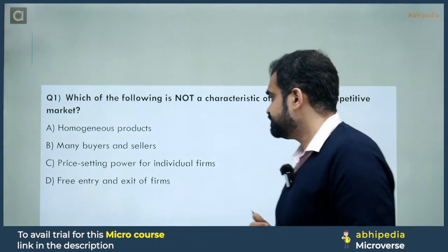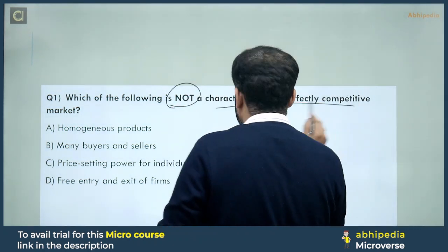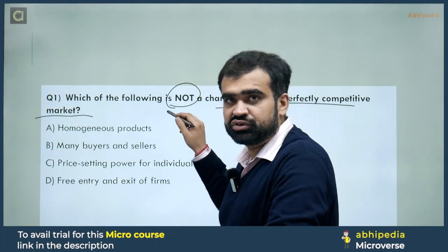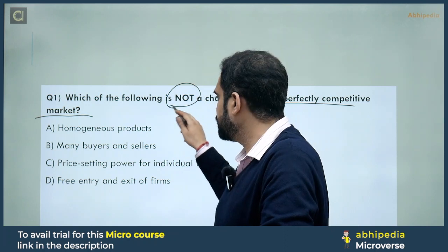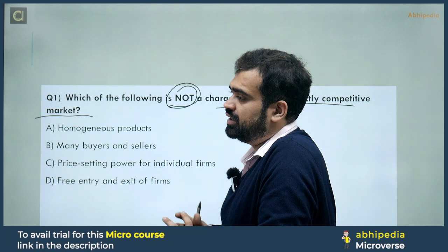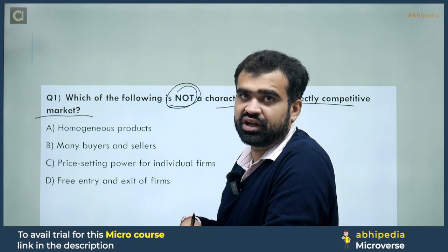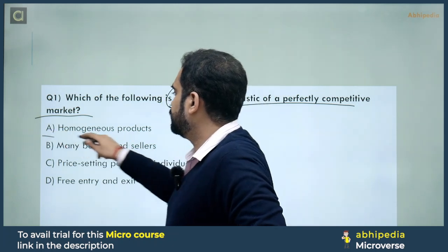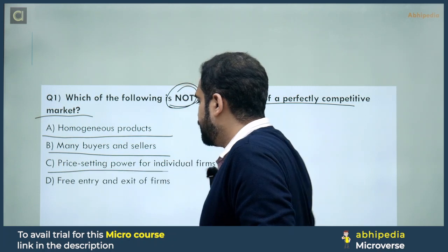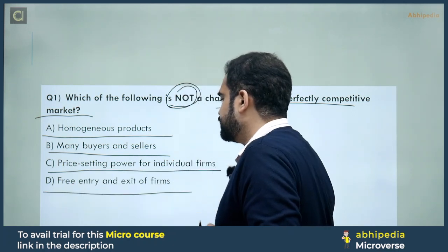First question: which of the following is NOT a characteristic of a perfectly competitive market? Always note whether the question asks for correct or incorrect things — read the question twice. Options: A) Homogeneous products, B) Many buyers and sellers, C) Price-setting power for individual firms, D) Free entry and exit of firms.